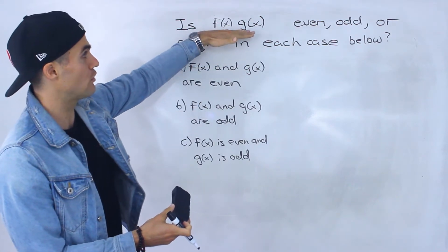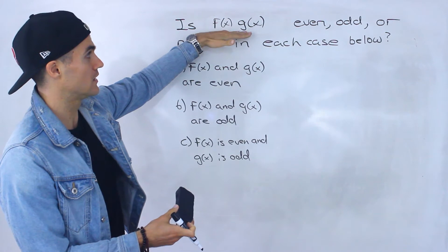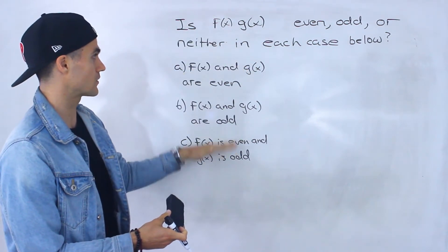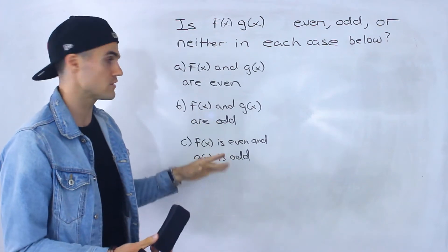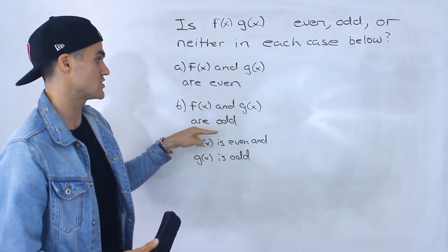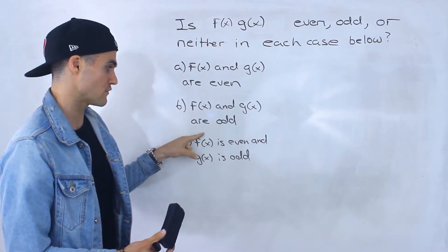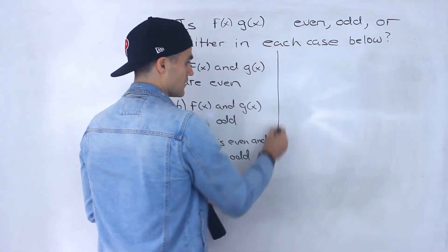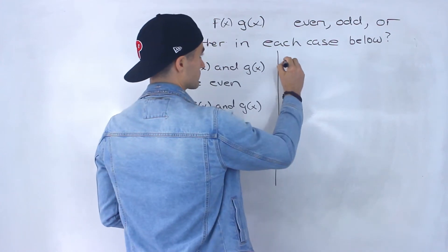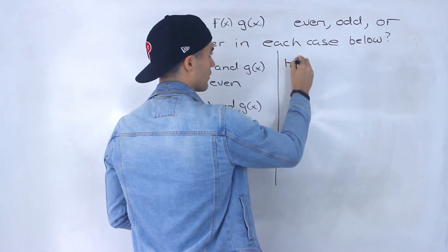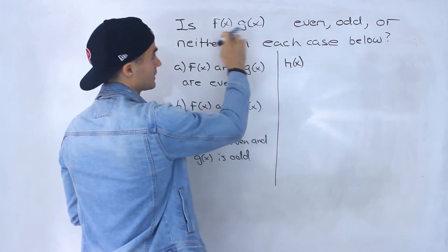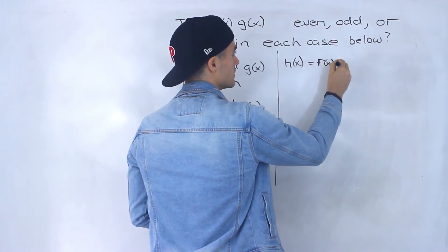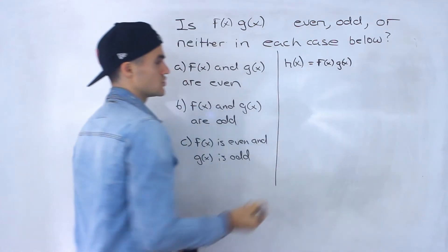We have to figure out if this function is going to be even, odd, or neither in each of these cases: if f(x) and g(x) are both even, if they're both odd, and if f(x) is even and g(x) is odd. Like I did in the previous example, I'm going to introduce another function h(x) and let it equal f(x) times g(x).